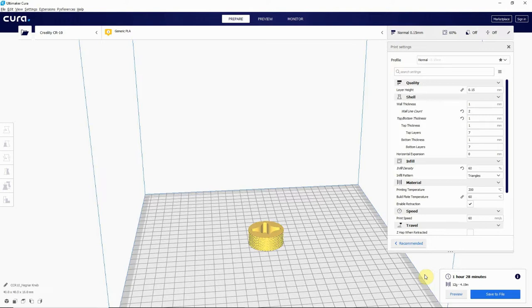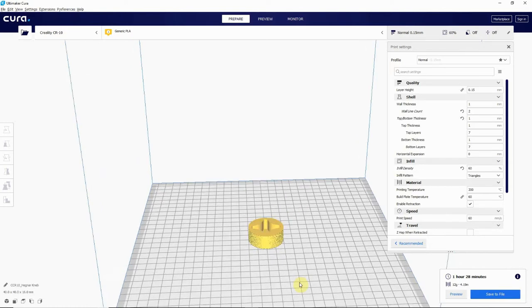If I made the infill a little less, then it would print a lot faster. There's other things you can do to change the printing speed, but it estimates an hour and 28 minutes. I got plenty of other things I can be doing while it's printing, so it's no big deal. I'll save that file.